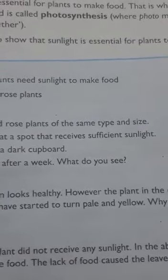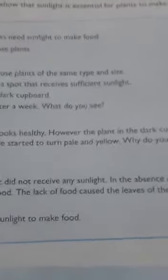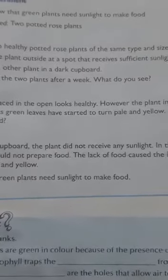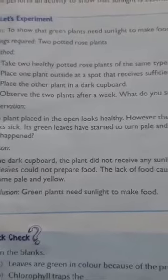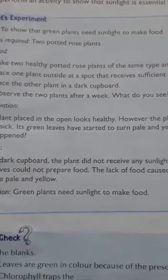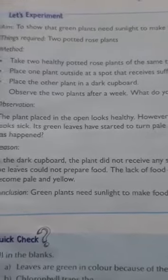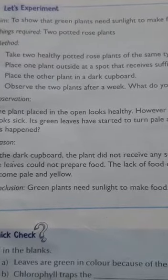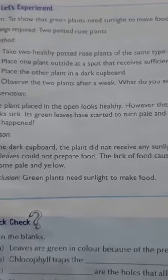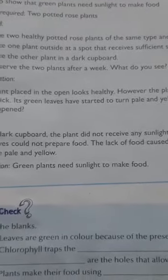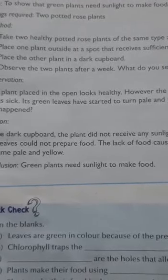Let us perform an activity to show that sunlight is essential for plants to make food. The aim is to show that green plants need sunlight to make food. You will need two potted rose plants of the same type and size.